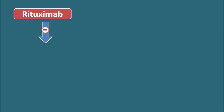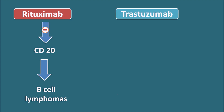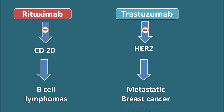Rituximab specifically acts against CD20 cells, which are present on B cells. Therefore, rituximab is used in B-cell lymphomas. These are the different monoclonal antibodies used in cancer chemotherapy, and rituximab specifically targets CD20 to act against B-cell lymphomas.